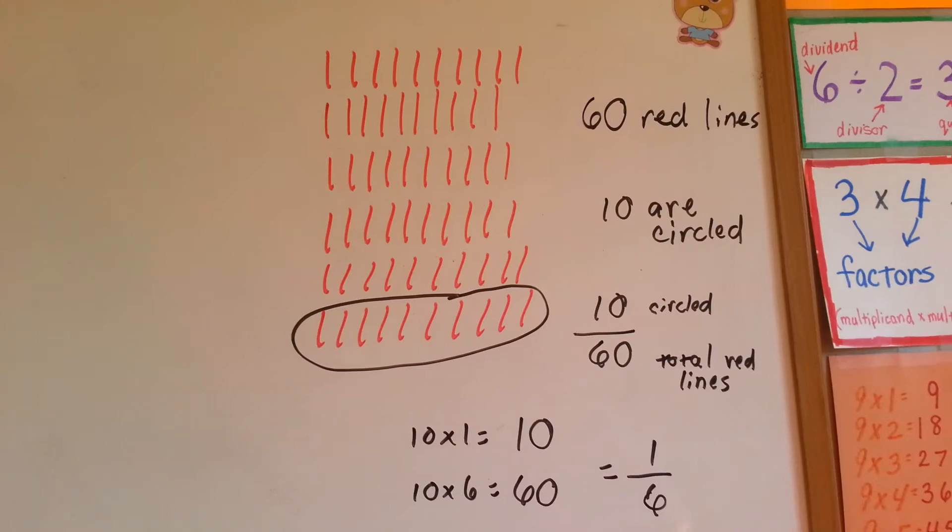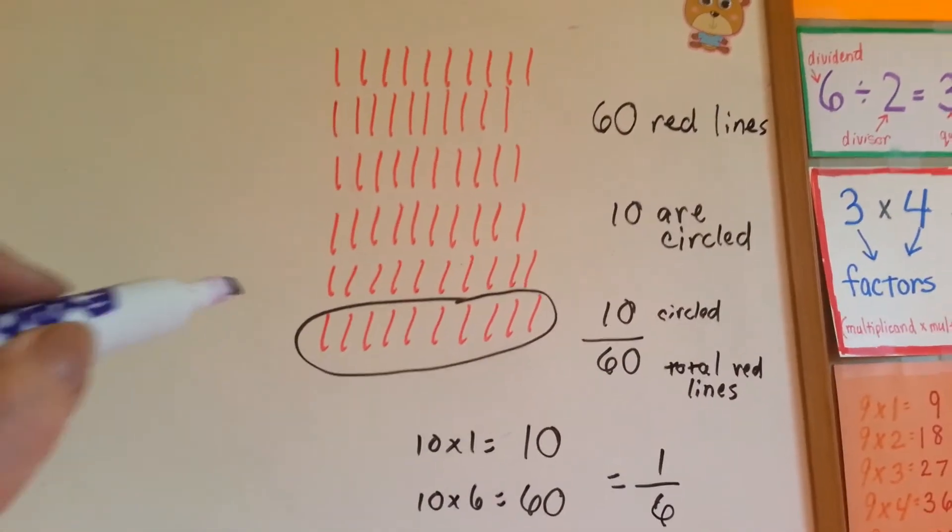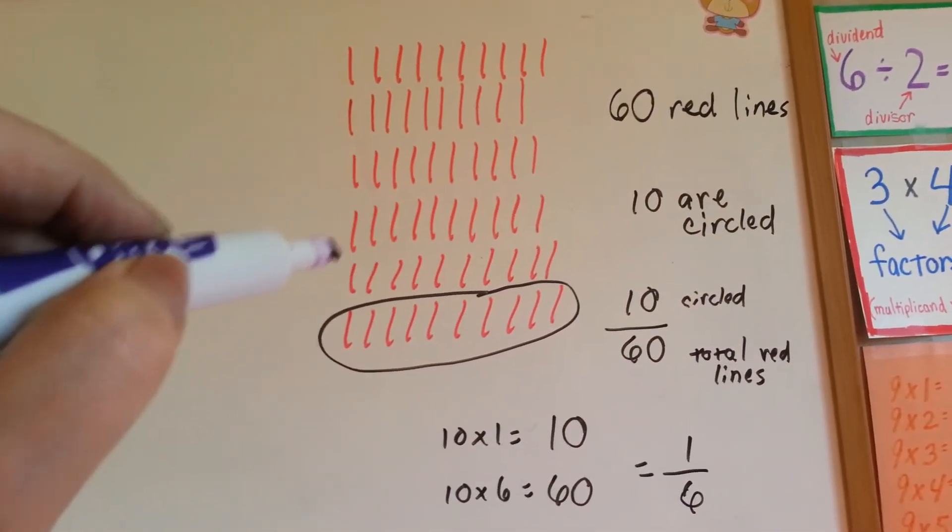Now we've got sixty red lines. Ten, twenty, thirty, forty, fifty, sixty.